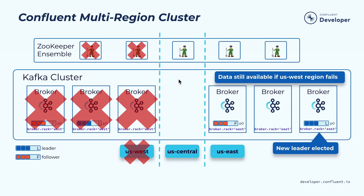In the multi-region cluster, you set up a stretch cluster across the regions you want to have your data. You spread the data between two data centers. For the control plane, since it's based on a consensus service, you need a third data center to place an extra ZooKeeper node or the new controller node in KRaft mode, so you can still have a majority of nodes available when a single data center goes down. When you set up the brokers, you configure the Rack tag for each broker — for example, US West and US East. When you create a topic, its replicas will be evenly spread between those different Racks. If one data center fails, all traffic can automatically flip over to the other data center because the leader will be moved over.